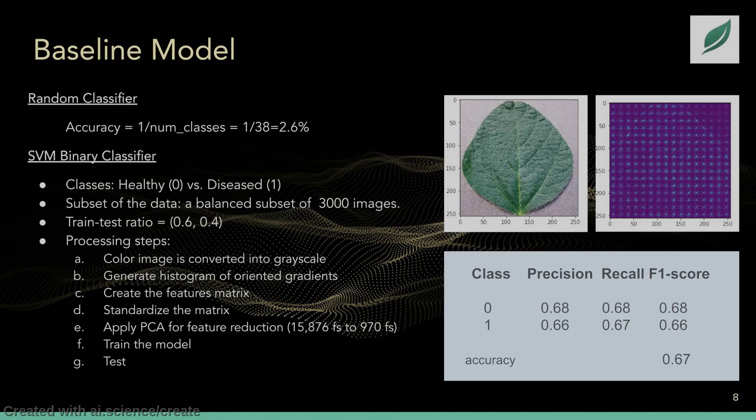If we consider random guessing as the baseline classifier, we will have an accuracy equal to 2.6% overall. To get familiar with image classification in Python and to practice the deployment process, we also developed another baseline model: an SVM binary classifier with two classes — healthy (class 0) and diseased (class 1). We randomly chose a balanced subset of 3,000 images, using 60% for training and 40% for testing.